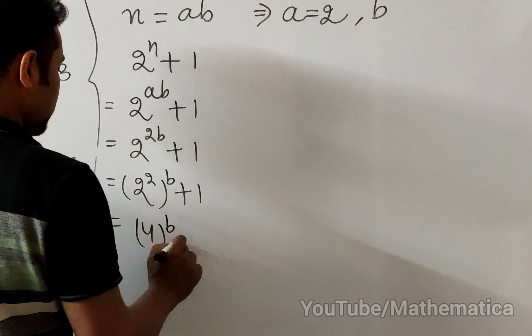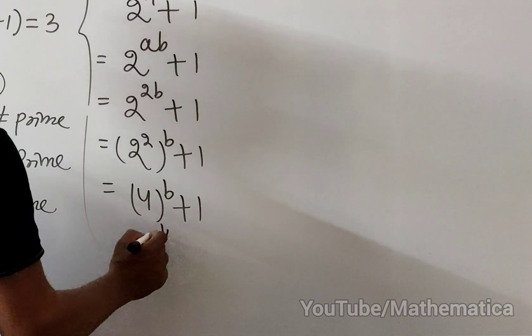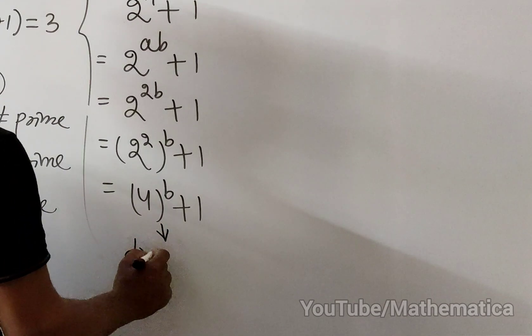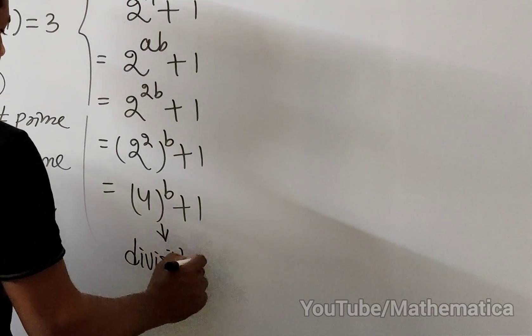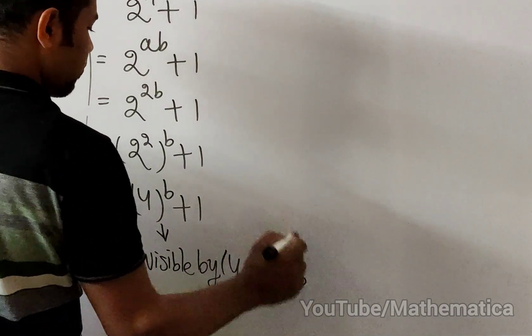This equals 4^b + 1 and this one is always divisible by 4 + 1, that is 5.